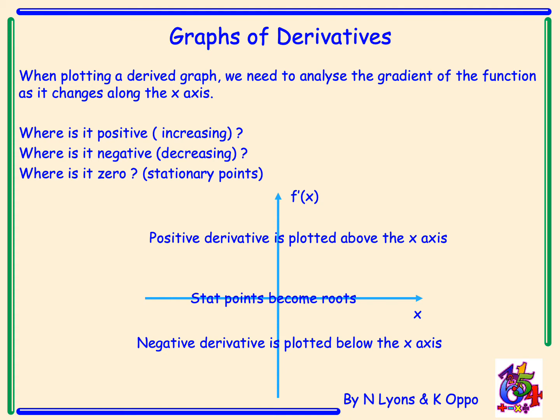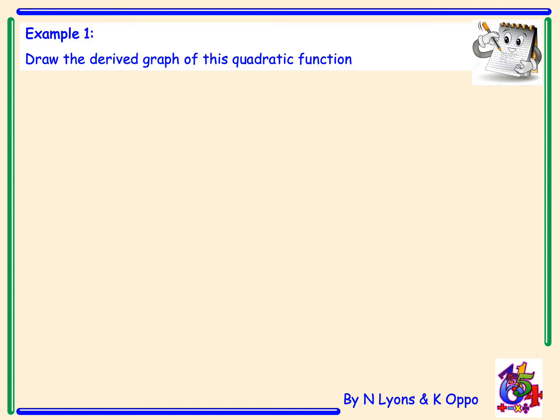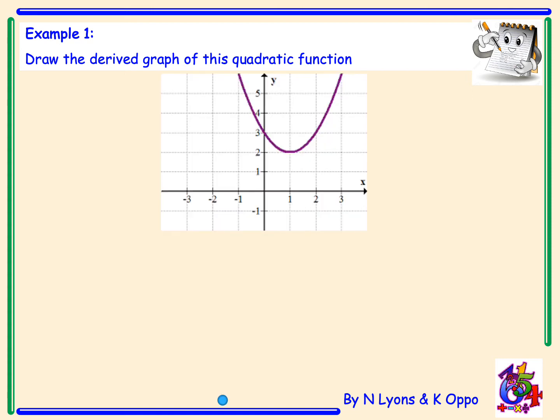Example 1: Draw the derived graph of this quadratic function. Looking at the quadratic function, analyse the gradient going from left to right along the x-axis. The gradient is decreasing — I've got a negative gradient, the function is decreasing.